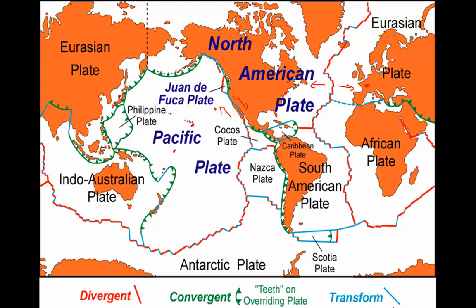Cities on different plates with a convergent boundary between them will be getting closer together with time. Take Tokyo and Honolulu: Honolulu is on the Pacific plate moving northward, and the Pacific plate is being subducted beneath the Eurasian plate. So as the Pacific plate is destroyed by subduction, Honolulu and Tokyo are getting closer together.